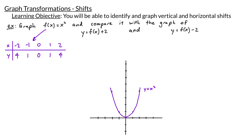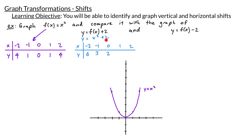Now let's compare with the graph of y = f(x) + 2, which is y = x² + 2. We'll make a table of values for x from -2 to 2. Plugging in -2 gives (-2)² + 2 = 4 + 2 = 6; x = -1 gives 1 + 2 = 3; x = 0 gives 0 + 2 = 2; x = 1 gives 3; and x = 2 gives 4 + 2 = 6.